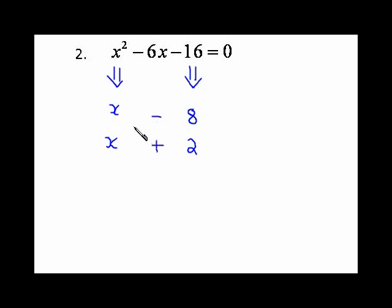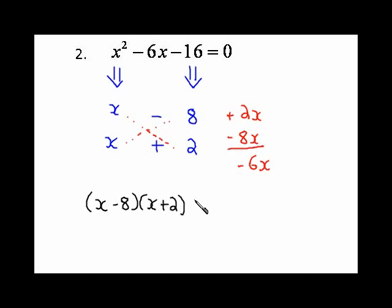If you did, x times positive 2 gives you positive 2x, and x times negative 8 gives you negative 8x. When you add the two together, you get negative 6x. That means in factored form, this is x minus 8 times x plus 2.